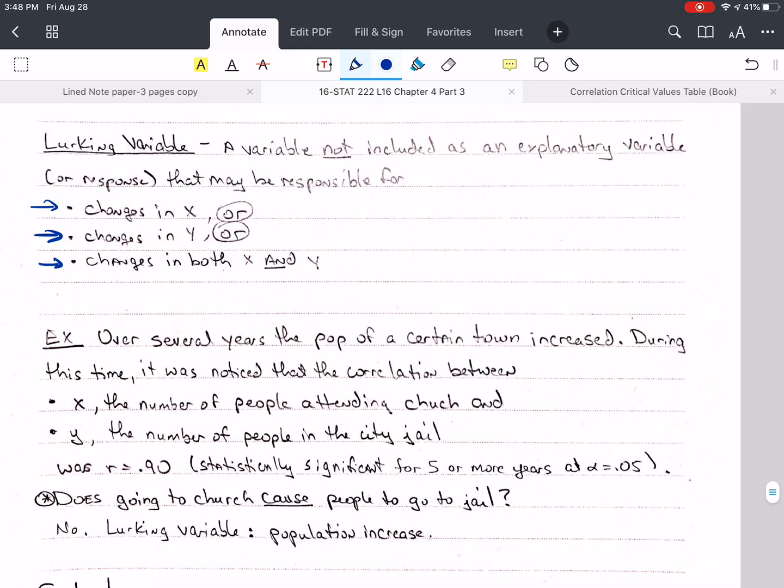So here's an example. Over several years, the population of a certain town increased. During this time, someone noticed that the correlation between what we're going to call X, the number of people attending church, and Y, the number of people going to jail, was R equals positive 0.90. And it was statistically significant for five or more years that this was a sample of that, at alpha equals 0.05.